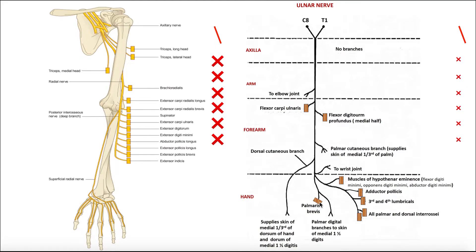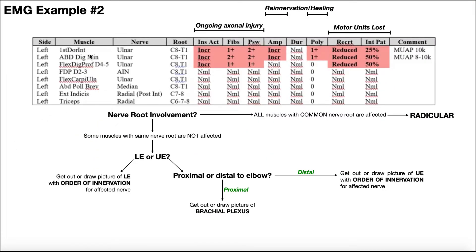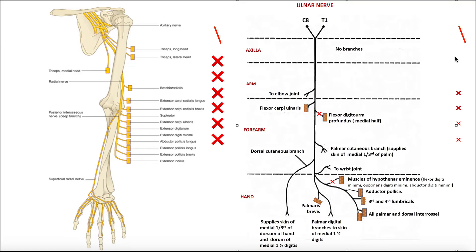Now I'm going to do something similar to what we did in the brachial plexus video: put an X or mark on every location that had an impairment. Where were the impairments? First dorsal interosseous, abductor digiti minimi, and flexor digitorum profundus medial half. So here's my flexor digitorum profundus — that had an impairment, so I'll put an X right there. Abductor digiti minimi also had an impairment — X right there. And then the first dorsal interosseous muscle — X right there. Remember, not everything is tested. Now that we've pictorially identified where the impairments are, I can deduce where the damage might be.